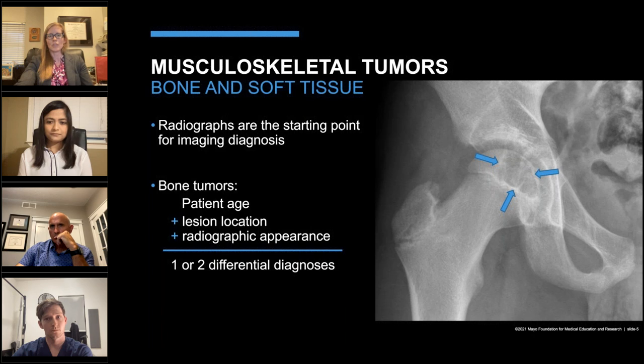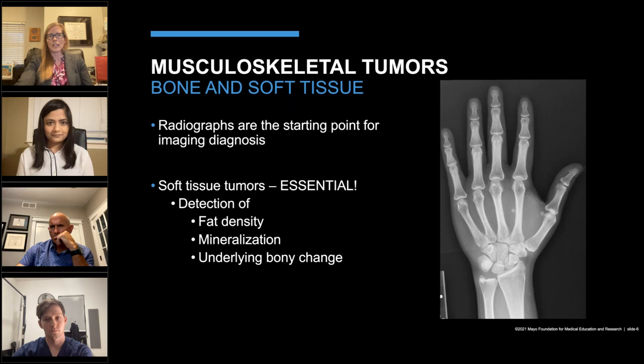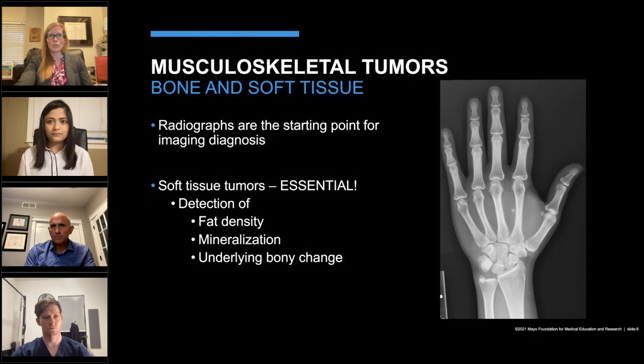For soft tissue tumors, you might wonder why you'd want radiographs since they're not great at delineating soft tissues. However, MSK radiologists consider radiographs an essential part of evaluation for a suspected soft tissue mass, because several soft tissue tumors can show intramural mineralization not appreciated on MRI. Knowing whether or not there's internal mineralization can greatly assist with narrowing the differential diagnosis.